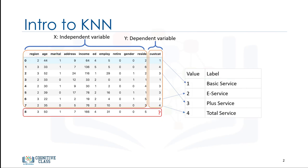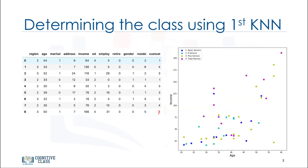Our objective is to build a classifier. For example, using rows 0 to 7 to predict the class of row 8. We will use a specific type of classification called K-nearest neighbor. Just for sake of demonstration, let's use only two fields as predictors, specifically age and income, and then plot the customers based on their group membership.